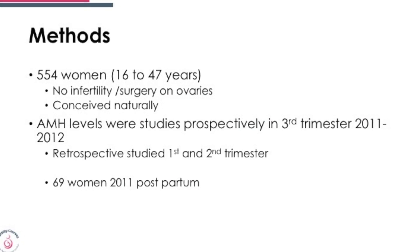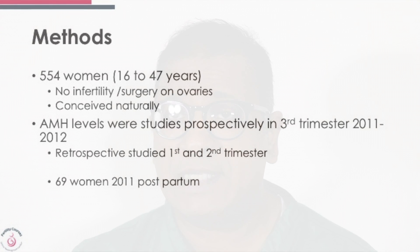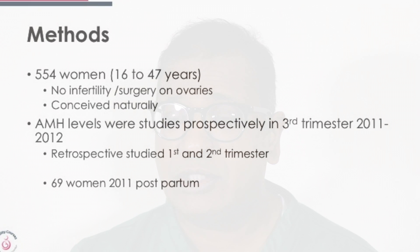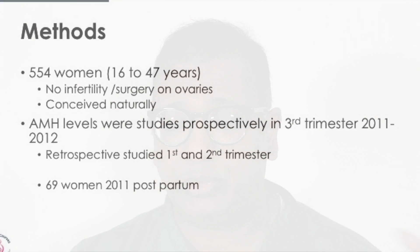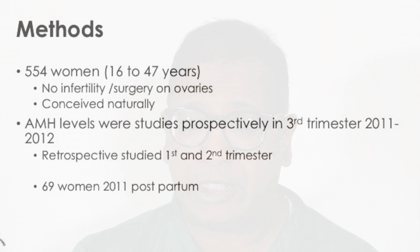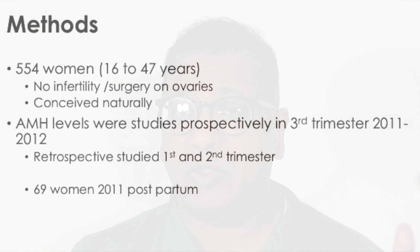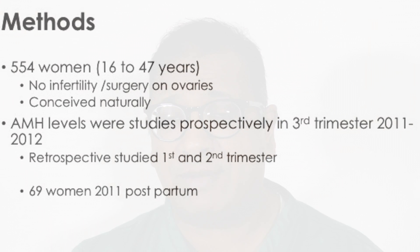The study included 554 women aged 16 to 47 years, with no infertility and no surgery on the ovaries, all of whom conceived naturally. AMH studies were done prospectively in the third trimester from 2011 to 2012, and retrospective analysis was done between the first and second trimester. 69 women were also studied postpartum.